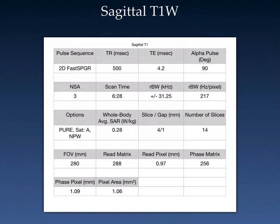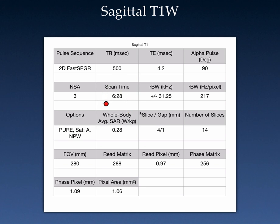For the diagnostic sequences, we'll start with the sagittal T1 weighted sequence. We chose a 2D fast SPGR sequence on a GE — a version of their spoiled gradient echo sequences. TR is 500 milliseconds, TE of 4.2, 90-degree flip angle, three signal averages, giving a scan time of 6 minutes and 28 seconds. We used receiver bandwidths of plus or minus 31 kilohertz (217 hertz per pixel). Imaging options used on all sequences included PURE for image intensity correction, an anterior SAT pulse, and GE's no phase wrap anti-aliasing oversampling option. The whole body SAR was only 0.28 watts per kilogram.